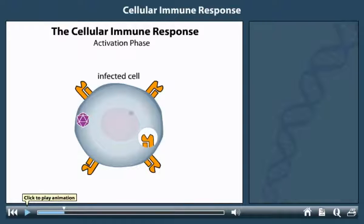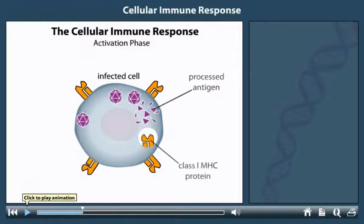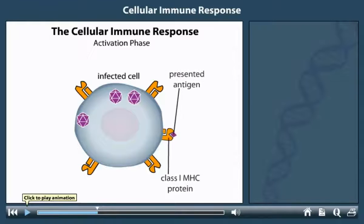The virus uses the cell's own machinery to replicate its genetic material and to produce new viral particles. During the infection, some of the viral proteins, which are antigens, are broken down by the cell and attached to class 1 MHC proteins. These complexes of antigens and class 1 MHC proteins are then presented on the cell surface.